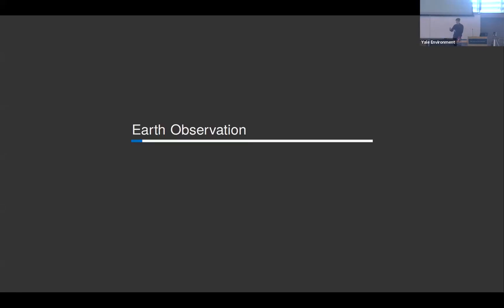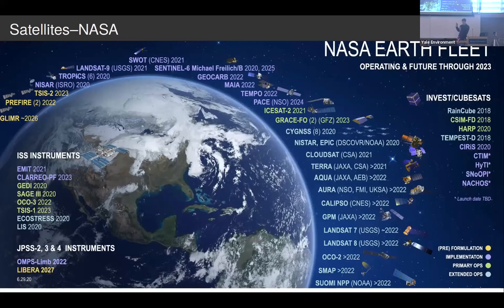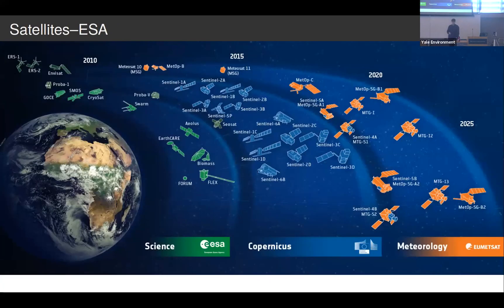I'll tell you a little bit about the satellite data I'm using. This is an overview of all of the NASA satellites which are currently flying or will be launched up to 2023. And these are all of the European Space Agency satellites which are scheduled to be launched. So we're up to about 40 or 50 satellites now, and this isn't counting all of the private companies launching satellites to do Earth observation as well. There is tons of data at varying temporal, spatial, and spectral resolutions.